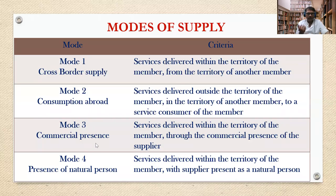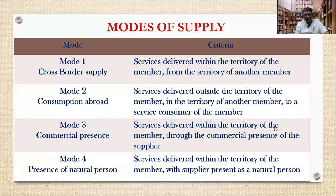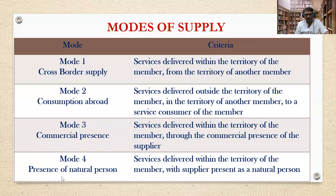Mode 3 is commercial presence, where service receivers come to the country where the service is available. For example, foreigners visiting India buy our services — consuming our food, staying in our hotels, taking tourism services. We earn in foreign currency. The service is delivered within the territory of the member through the commercial presence of the supplier, without needing to go to the receiver's territory.